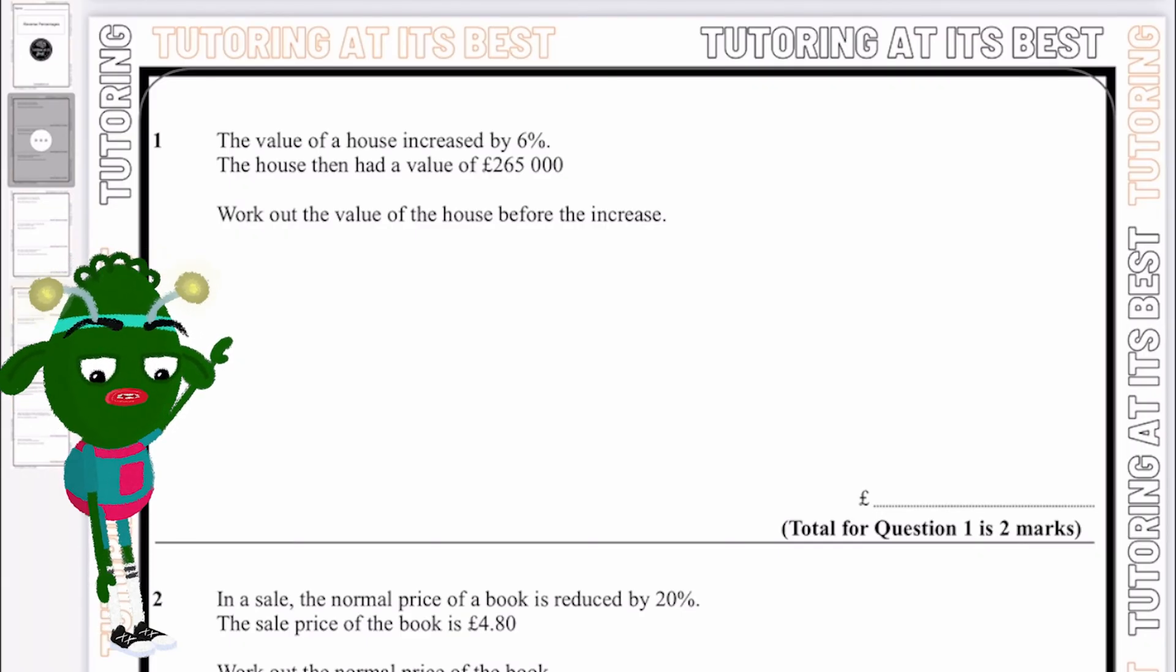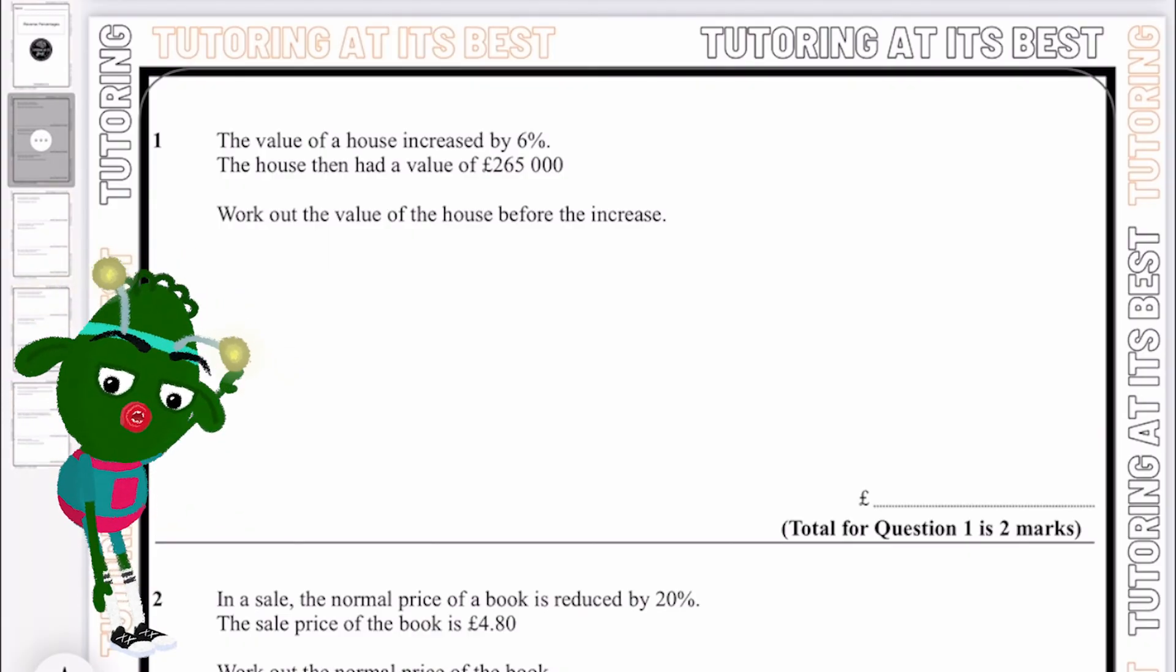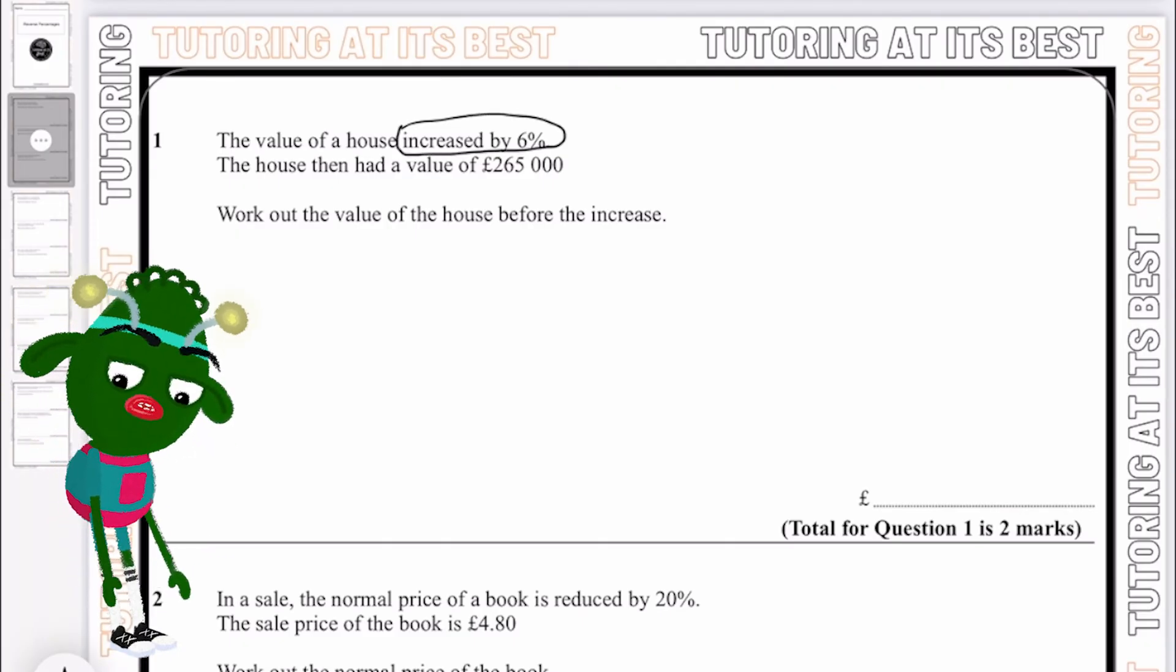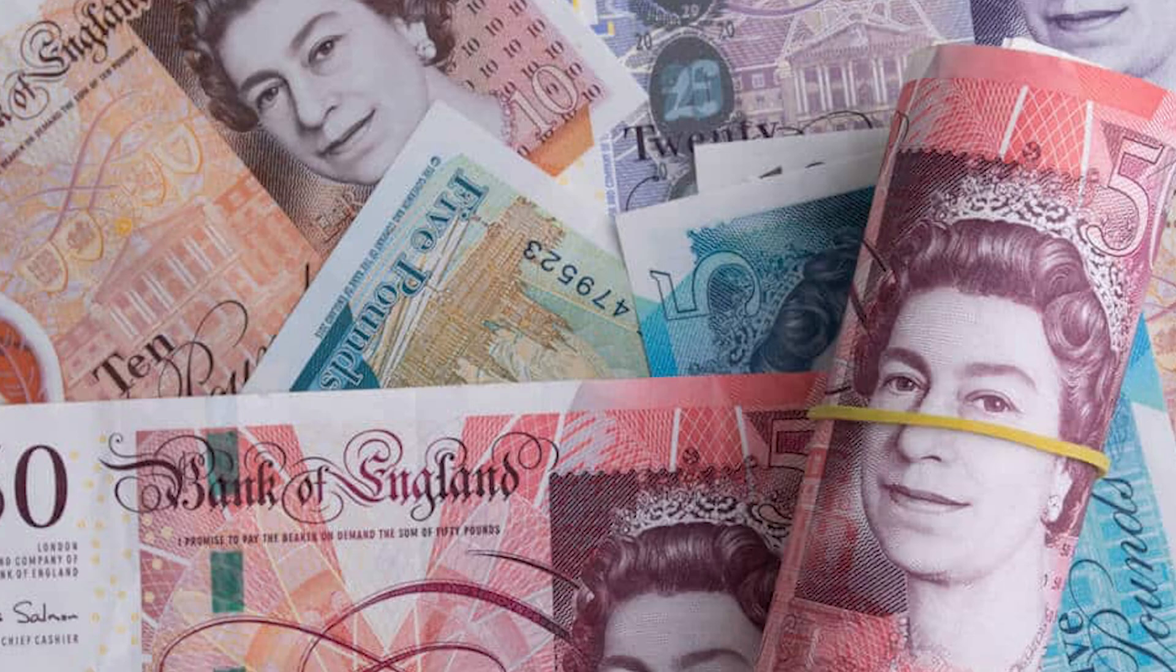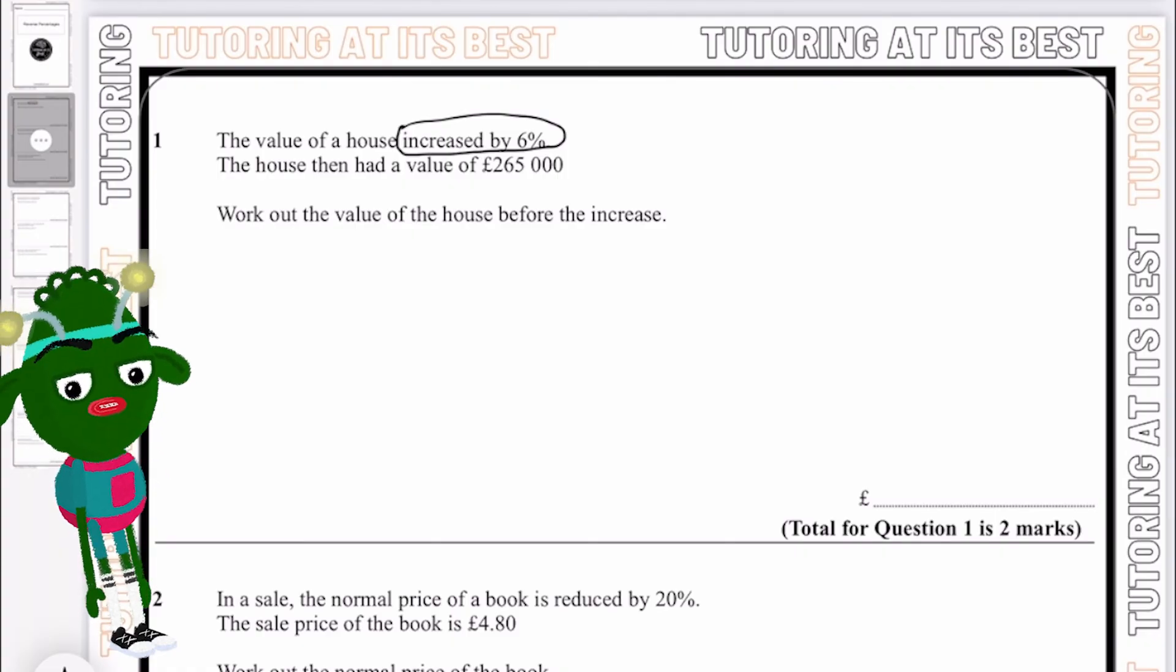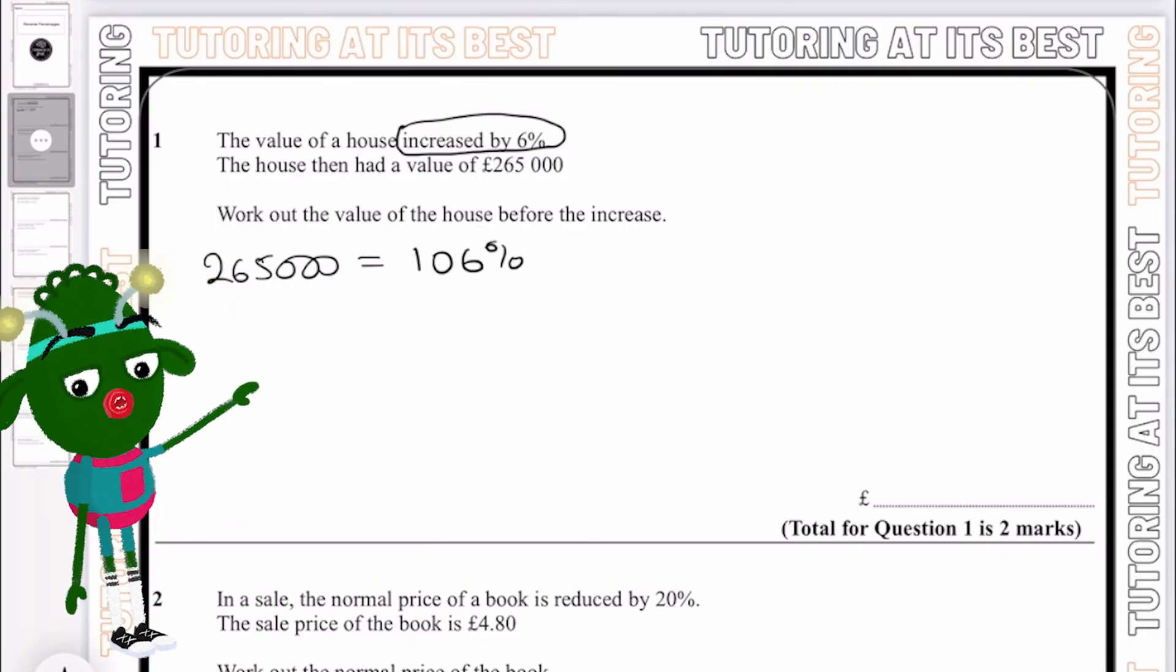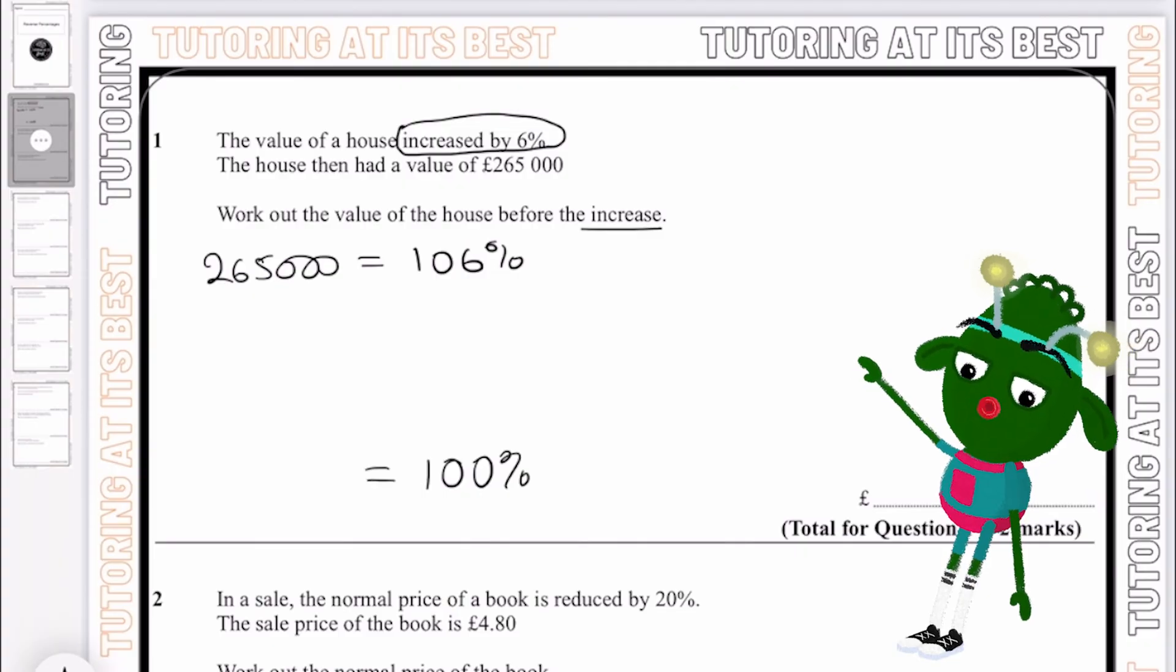So without further ado, let's jump into this right away. The value of a house has increased by 6%. The house then had a value of £265,000. Work out the value of the house before the increase. We know it's increased by 6%, which means the initial price when it was bought was less than £265,000, which means this person has made a profit. We understand that £265,000 is equivalent to 106%, and we need to find out the value before the increase, so we are looking for 100%.